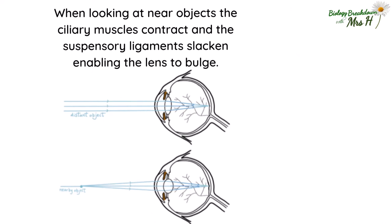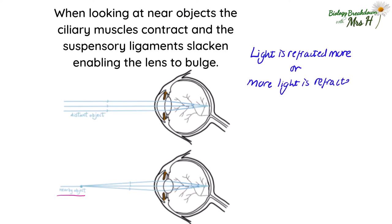When looking at near objects, the ciliary muscles contract and the suspensory ligaments slacken, enabling the lens to bulge. Students will then go on to say 'light is refracted more' or 'more light is refracted.' One of these sentences is correct despite both answers looking very similar — the placement of the word 'more' is so important here. 'Light is refracted more' is correct.